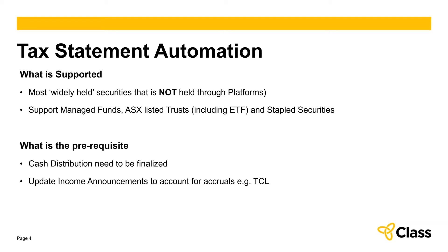What I'm going to show you is for those directly held, either through one of the brokers, and how we can automate that. The prerequisite is that we need to make sure the actual cash distribution is finalized, because we use that to turn the templates into components. We need to make sure that the fund is fully processed and any cash distribution has been generated. If there are any adjustments to the income, like accruals for stapled securities, you need to do that before you generate the actual tax statement, because if the income is not correct, the tax statement we generate will probably not be correct either.